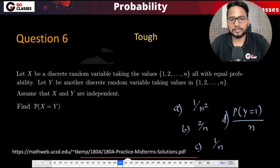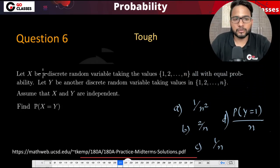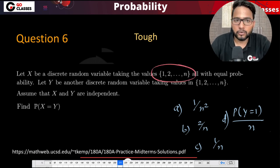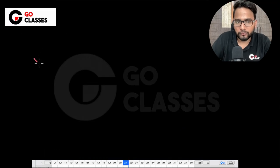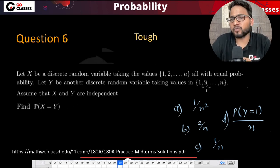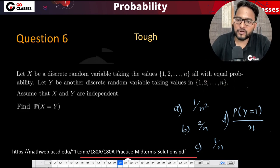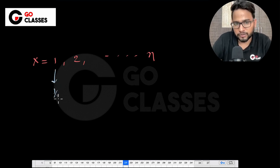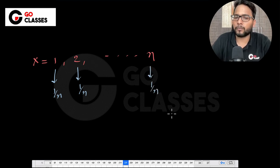Let's revisit the question from the previous video. X is a discrete random variable taking values 1, 2, ..., n. The PMF of X is given: it takes all values with equal probability, meaning a uniform distribution where each value has probability 1/n.